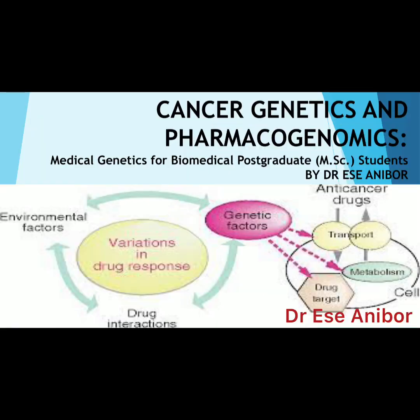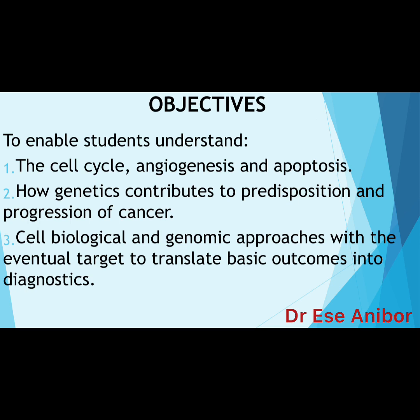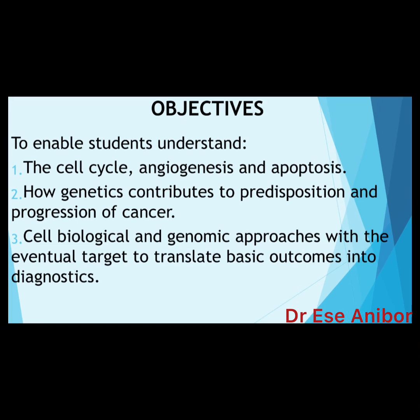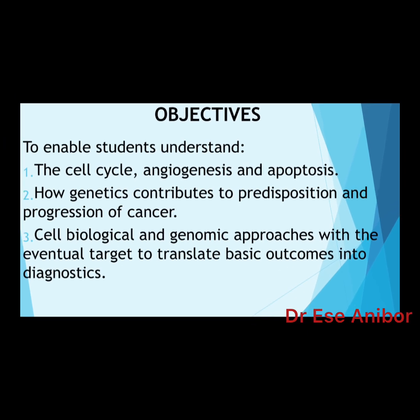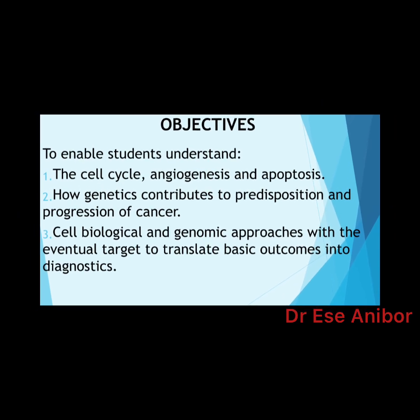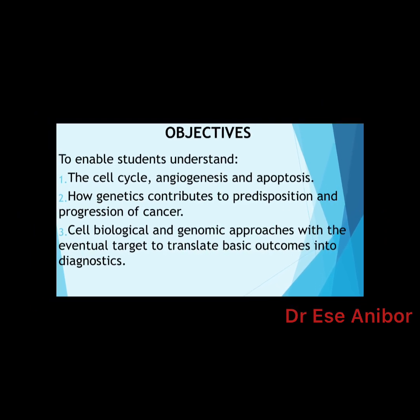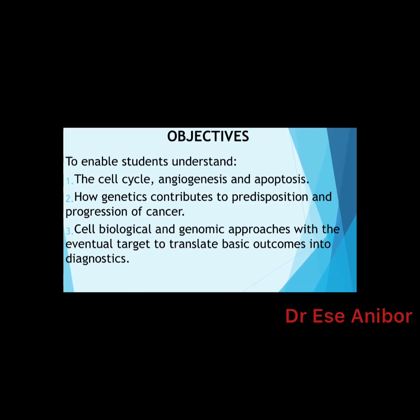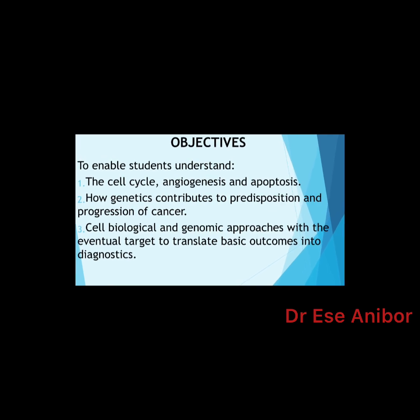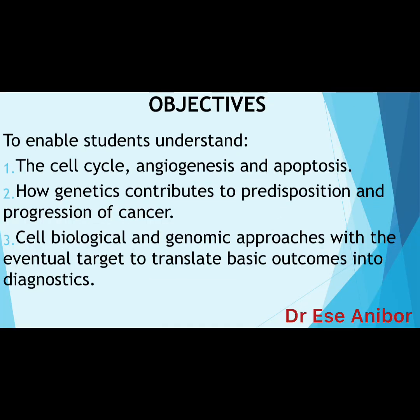What are the objectives? The students need to understand the cell cycle, angiogenesis, and apoptosis. They need to know how genetics contributes to predisposition and progression of cancer. They also need to understand cell biological and genomic approaches with the eventual target to translate basic outcomes into diagnostics.